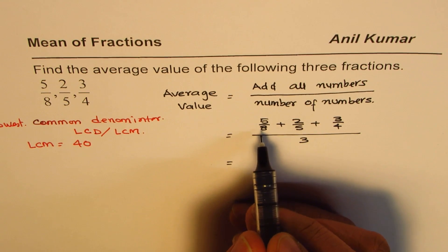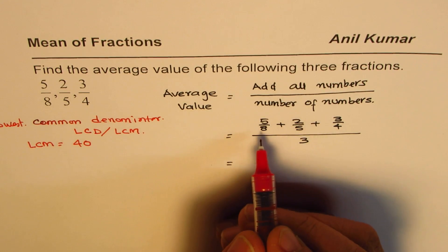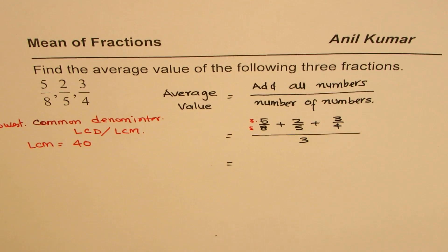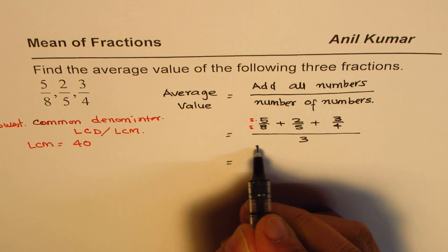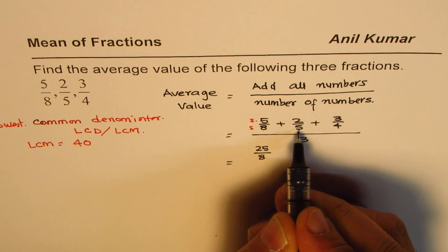So what we will do here is we'll write them with 40 as the denominator. So 5 over 8 could be multiplied by 5 both numerator and denominator, and then what do you get? We get 5 times 5 is 25, so we get 25 over 40.